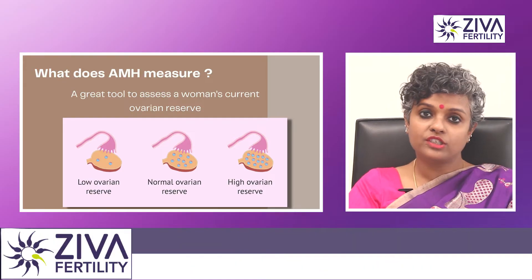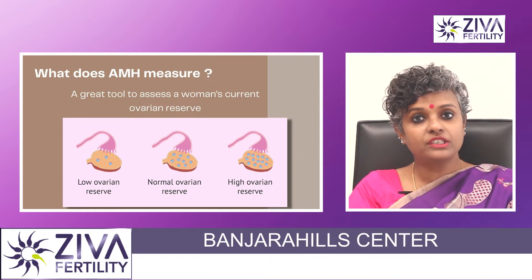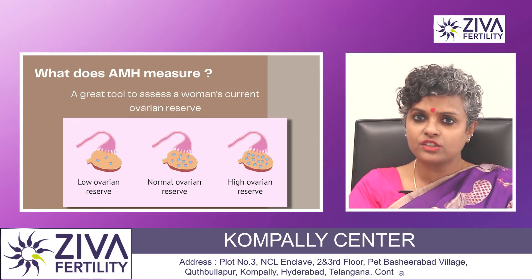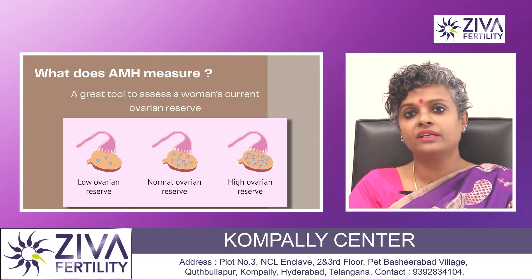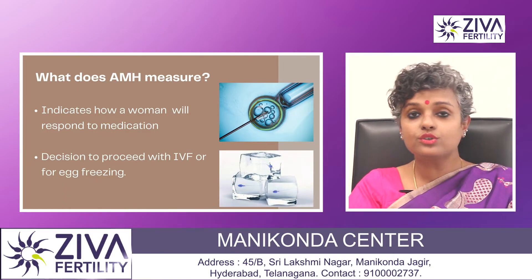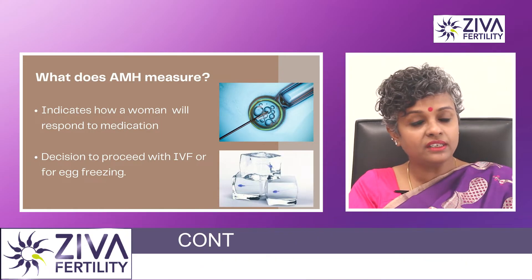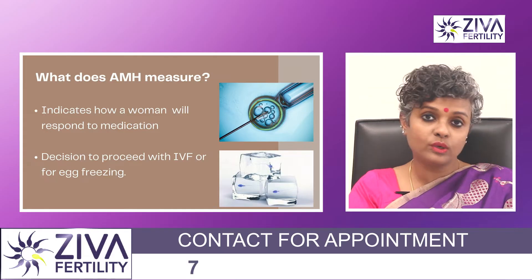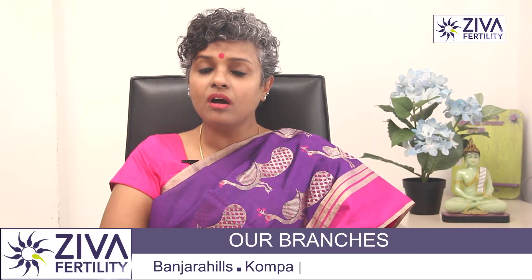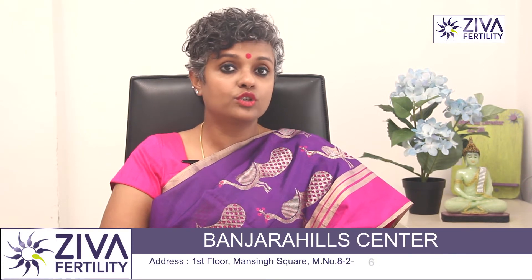So what does AMH measure? AMH is a great tool to assess a woman's current ovarian reserve. It gives an overall picture of what the ovaries look like today, and can help set realistic expectations on the number of eggs that may be retrieved. It can also indicate how you will respond to medication, whether IVF is a suitable treatment option, and whether egg freezing is a good option — which is also one of the options for women with low AMH values. However, AMH is not a predictor of whether a woman can get pregnant spontaneously in the future.